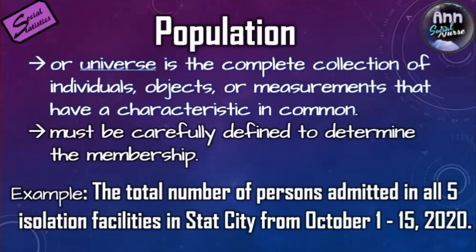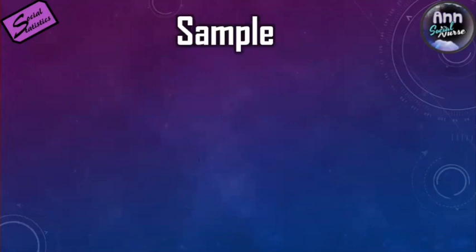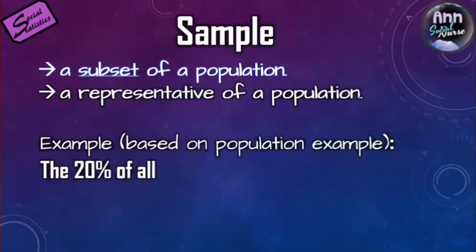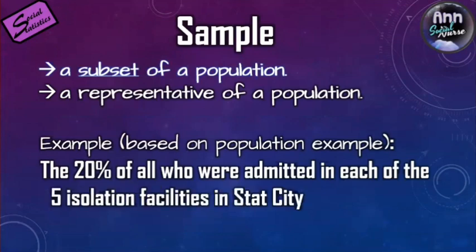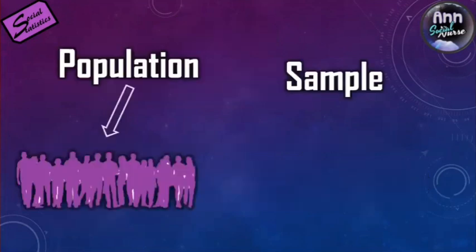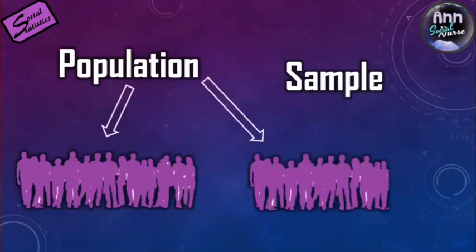Since it is expensive and difficult to study an entire population, we need a sample. A sample is a subset or representative of a population. Based on the earlier population example, we arbitrarily take 20% — though it may actually be less or more — so for example: the 20% of all persons admitted in each of the five isolation facilities in Stat City from October 1 to 15, 2020.